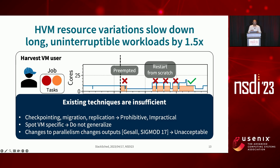Unfortunately, existing techniques do not suffice to curb these slowdowns. Techniques like checkpointing, migration, and replication are infeasible for these workloads. There are techniques that mitigate spot VM preemptions, but they often exploit how VMs are priced and don't necessarily generalize to harvest VMs. There are also techniques to dynamically change the level of parallelism for these workloads, but that often affects their correctness, which is unacceptable.